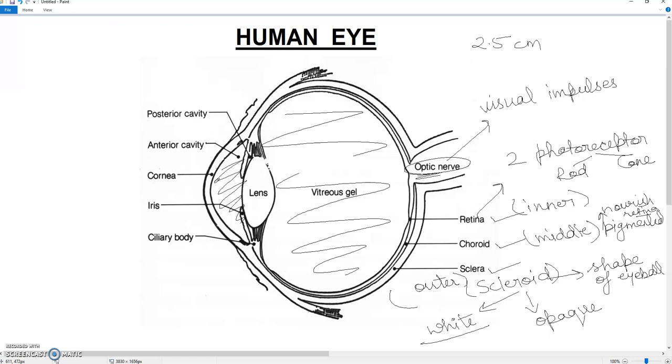Its function is to allow light to pass through the eye. And its curvature helps in focusing an inverted image on the retina by the cornea.